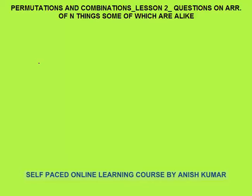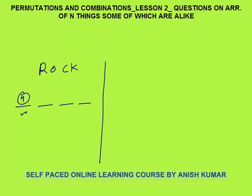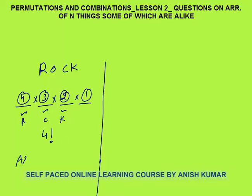Let's take different letters: R, O, C, K. Total arrangements — how many? 4 letters will come on 4 places. The first place can be filled with any of R, O, C, or K — 4 ways. The second place can be filled with any of the 3 remaining letters, the third in 2 ways, and the last in 1 way. This is 4 factorial. As discussed in the previous lesson, arrangement of n different things taking all together is n factorial.